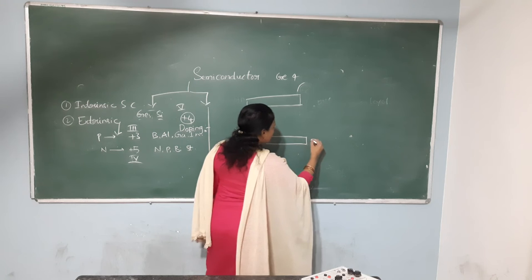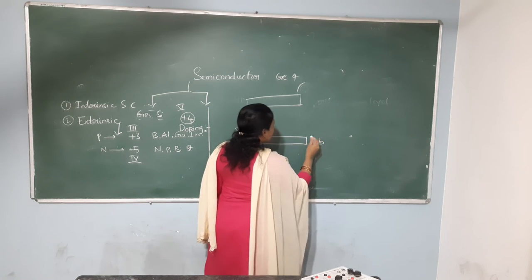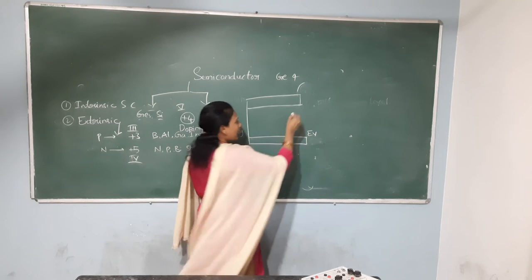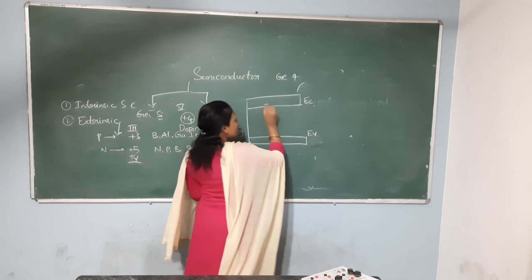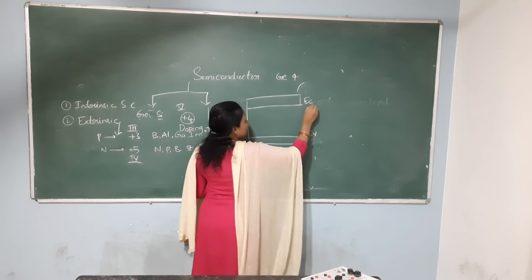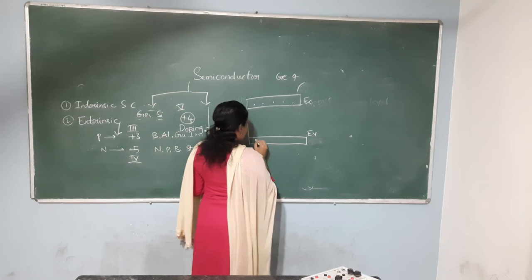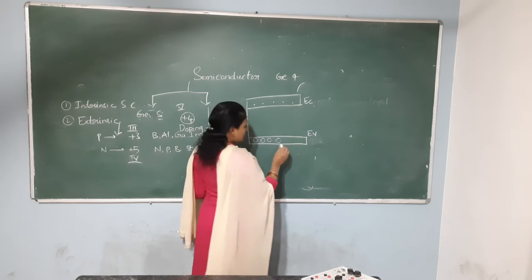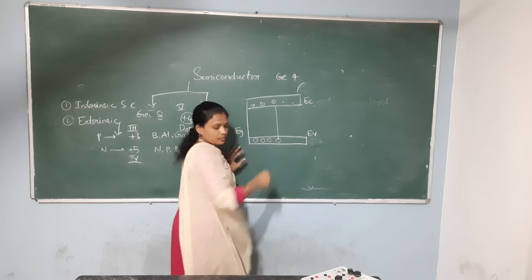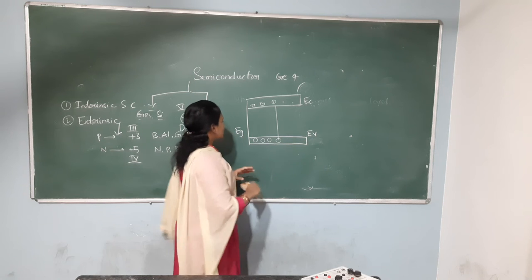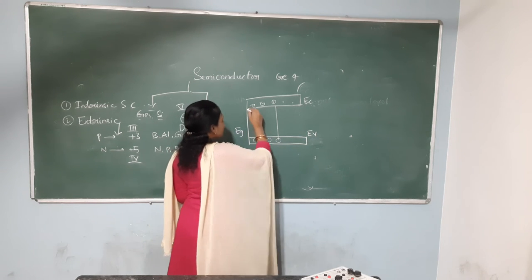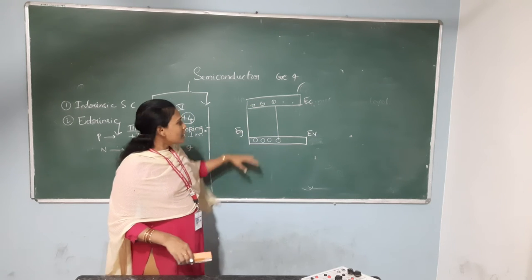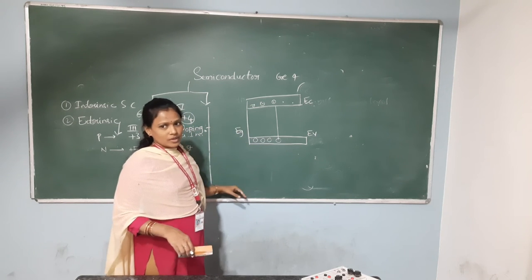In the energy level diagram, the downside state is the valence band, which contains the valence energy. Above it is the conduction band. What is the energy gap? The energy gap between the valence band and the conduction band is different for N-type and P-type semiconductors.